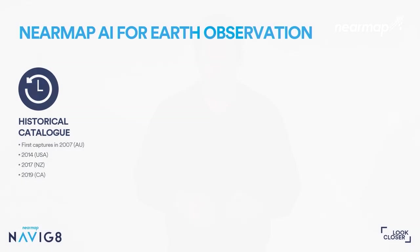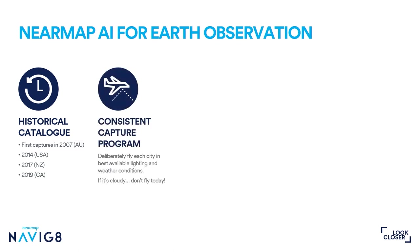This is where NearMap.ai has a wonderful role to play. The historical catalogue spans 15 years in Australia and eight years in the US, and is growing in New Zealand and Canada. Throughout that time, the consistency of the capture program is just absolutely incredible — you can drill back in time and still get a similar result. The team looks at seasonality, what time of day to capture, and avoiding weather patterns. It's a big logistical challenge.